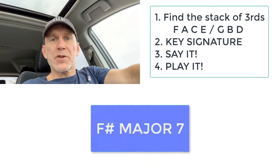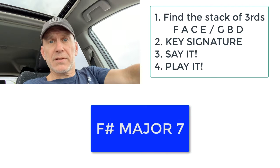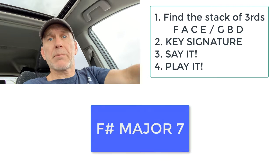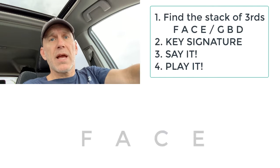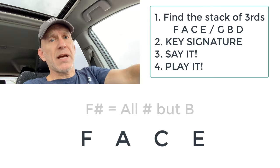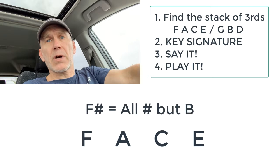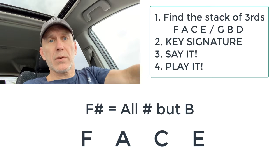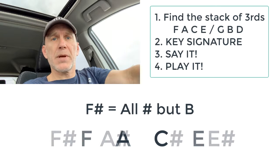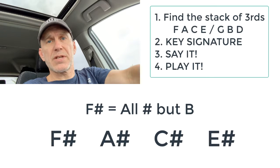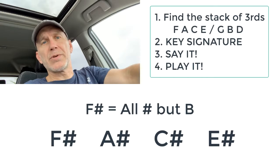Then F sharp major 7, same letters. In the F sharp scale, everything is sharp but B, so it'll be F sharp, A sharp, C sharp, E sharp — and play it on your instrument.